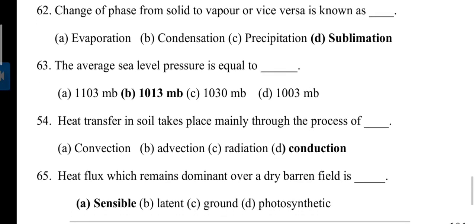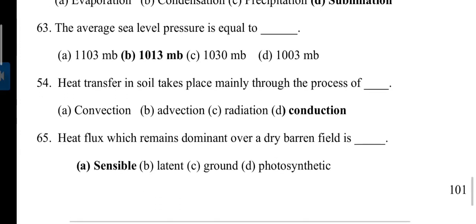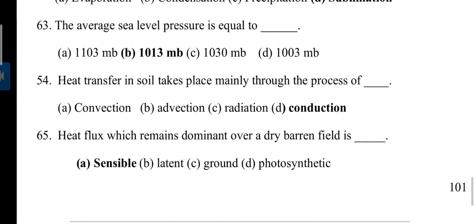Question: Optimum temperature for wheat crop is between 15 to 20 degrees Celsius. It varies from place to place. Next, change of phase from solid to vapor or vice versa is known as sublimation. Examples of sublimation are camphor and dry ice sublimes.